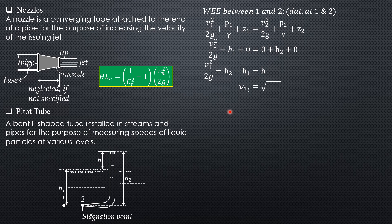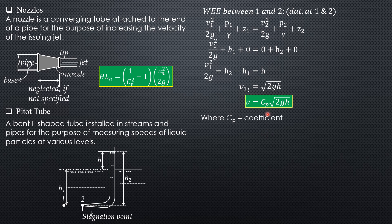Solving for the velocity head, V₁²/2g = H₂ − H₁, which is denoted as H. Therefore the theoretical velocity is simply the square root of 2gH, where H is the difference between the liquid surface in the Pitot tube and the outer liquid surface. The actual velocity is corrected by introducing the Pitot tube coefficient, which is usually a high value such as 0.99. If not specified, assume it equals one.